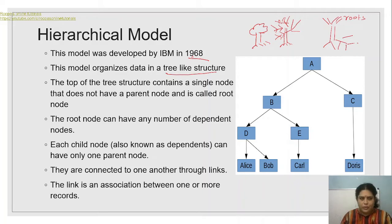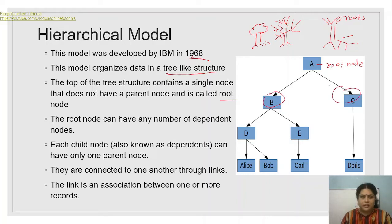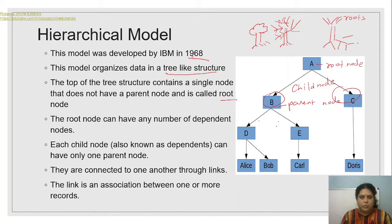The top of the tree structure contains a single node that does not have a parent node, called the root node. The root node can have any number of dependent nodes. Each child node, also known as a dependent, can have only one parent node. For example, B and C are child nodes of the root node A, and D and E are child nodes of B. Nodes are connected through links.